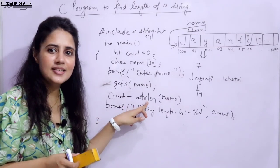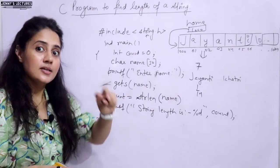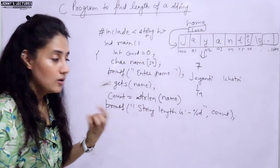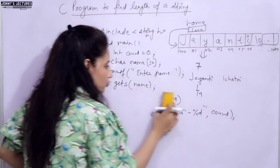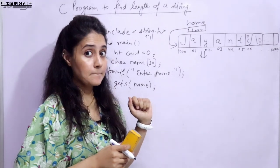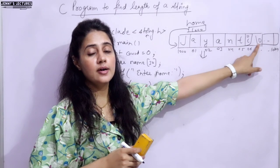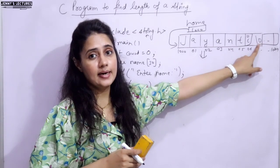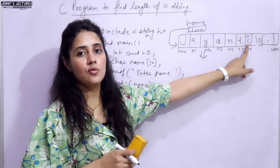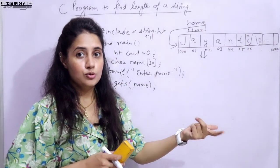Using the predefined function strlen is very simple to find the length of a string - nothing more to it. But the second approach is: if you don't use the strlen function, you have to write your own logic. You have to count the number of characters in the string until you find the null character.